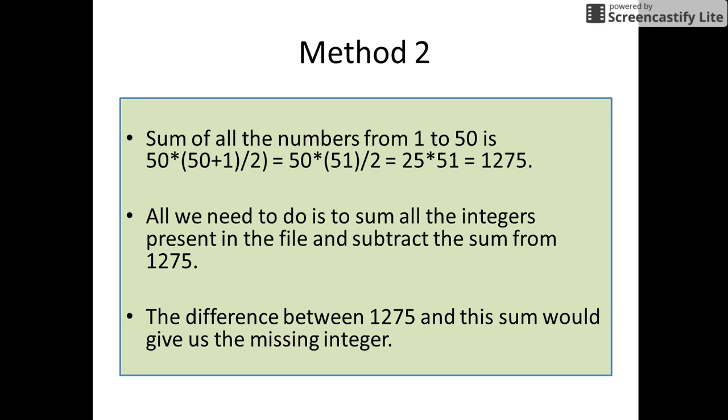So we find out the sum of all the numbers from 1 to 50 using the formula n(n+1)/2, that is 50 into 50 plus 1 by 2. The sum of the numbers is found to be 1275.